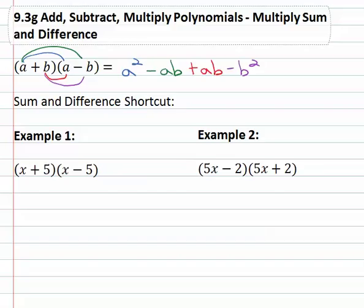You may notice then that the two middle terms are like terms. Negative ab plus ab are nice because they subtract out to zero, which means for our final answer we're just left with a squared minus b squared.